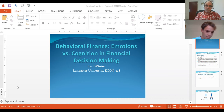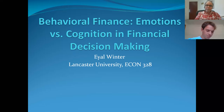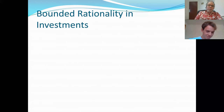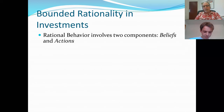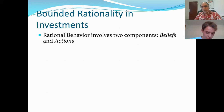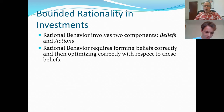Now we are with behavioral finance — emotion versus cognition — and I'm going to talk about financial decision making and bounded rationality in investment. Whenever we talk about decision making and rationality, we actually talk about two components: one is beliefs and the other is actions. When we pursue some objective, we first form beliefs about possible outcomes and consequences, and based on these beliefs we decide on the action.